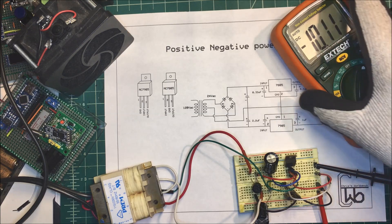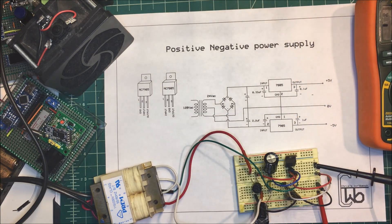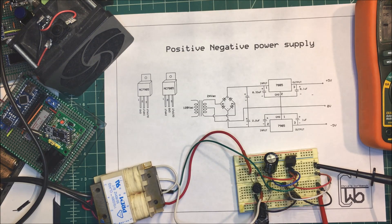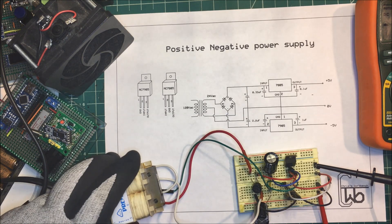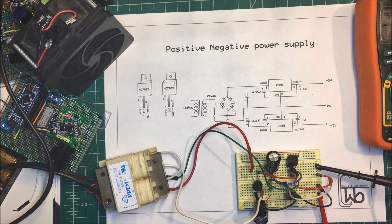And I got it negative because I have the leads backwards here. But that's the dual voltage or positive negative power supply, and some op amps need this configuration to actually work. So they're fairly simple to put together. And that's it, thank you.